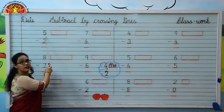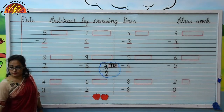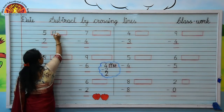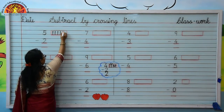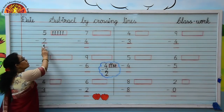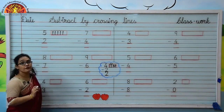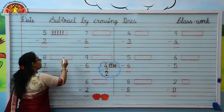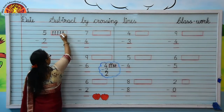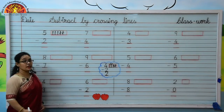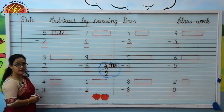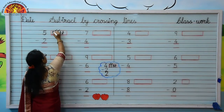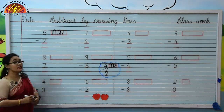Kids, which number is written here? Yes, 5. Draw 5 lines: 1, 2, 3, 4, 5. The downside number is 2. Kids, we will cross 2 lines from 5 lines. Let's cross them: 1, 2. Now you tell me how many lines are left? Yes, let's count: 1, 2, 3.